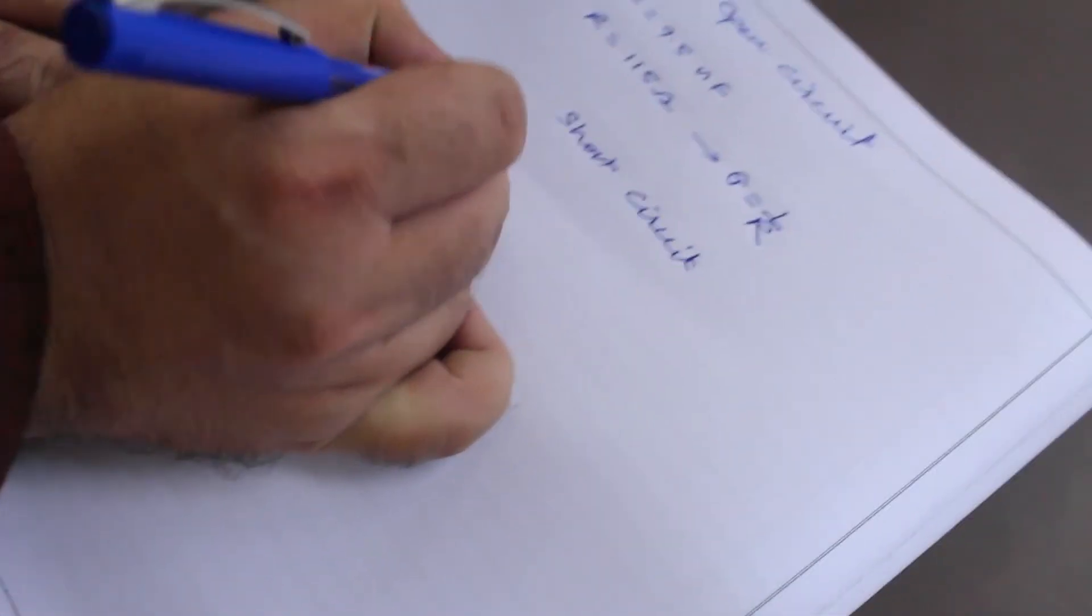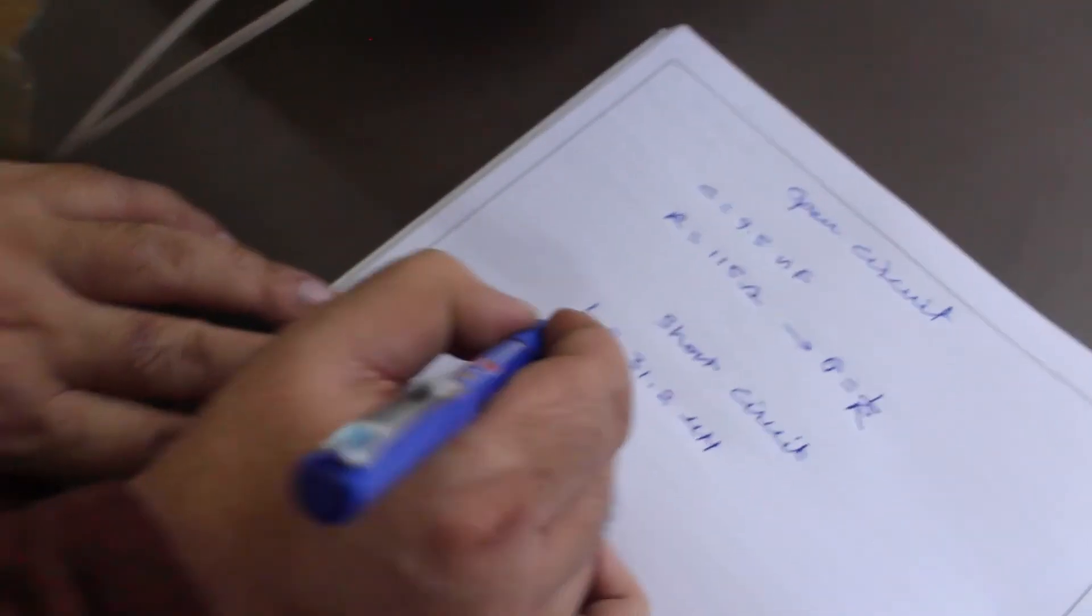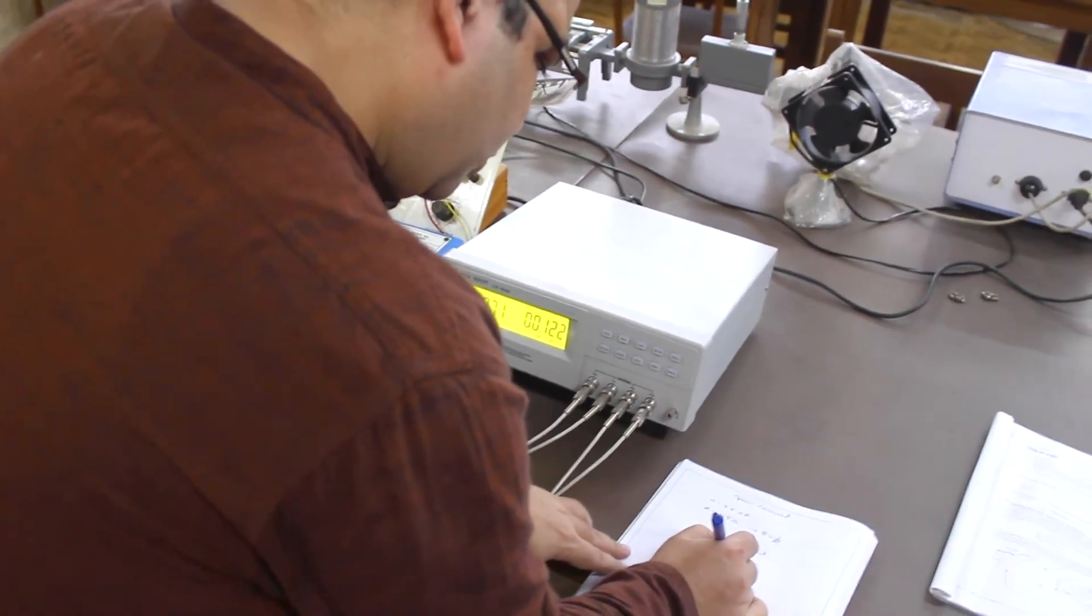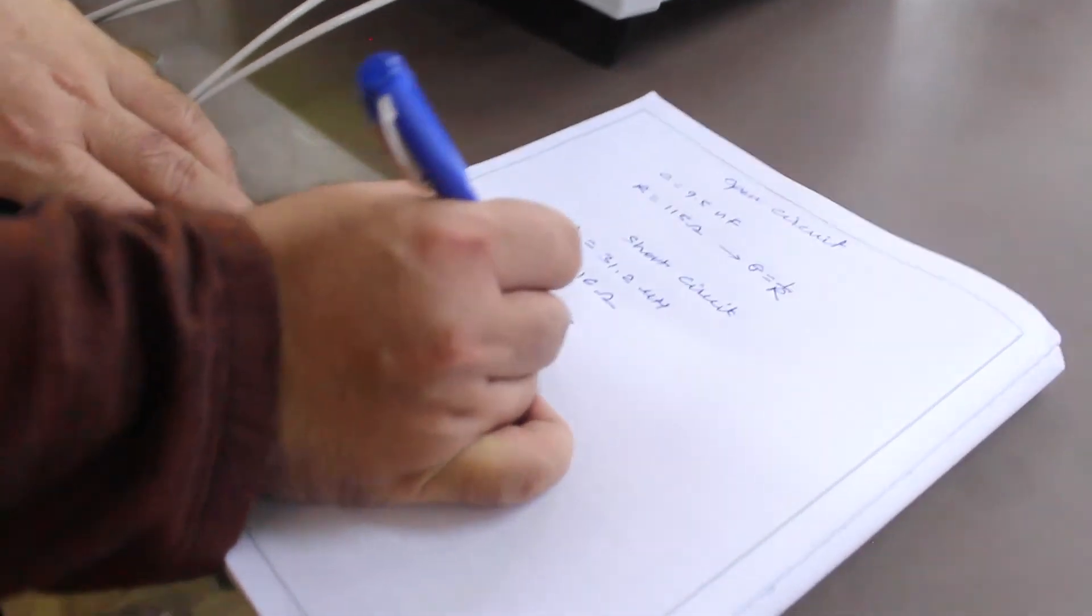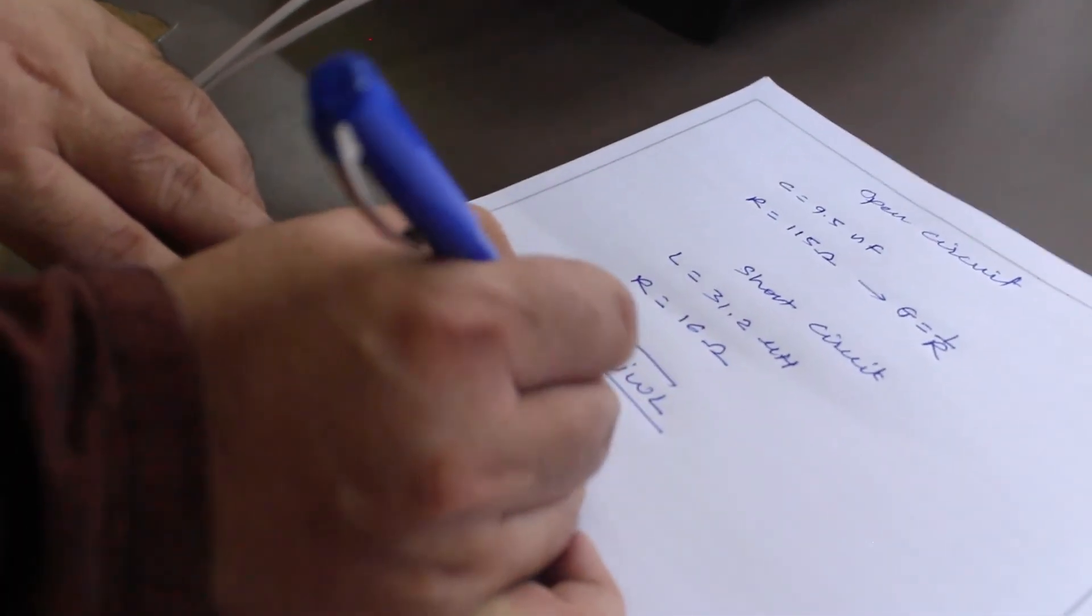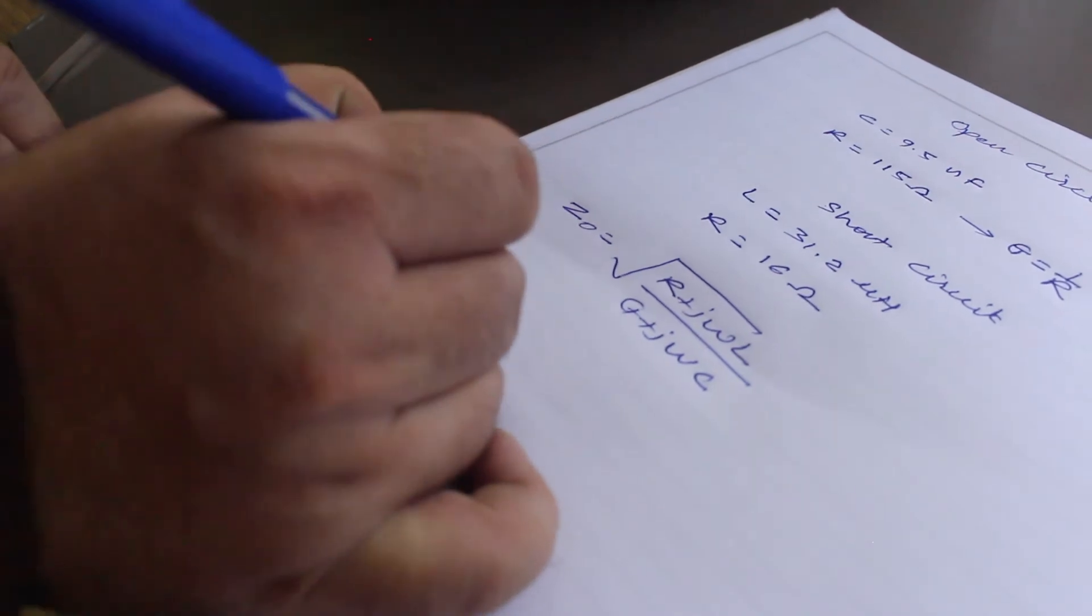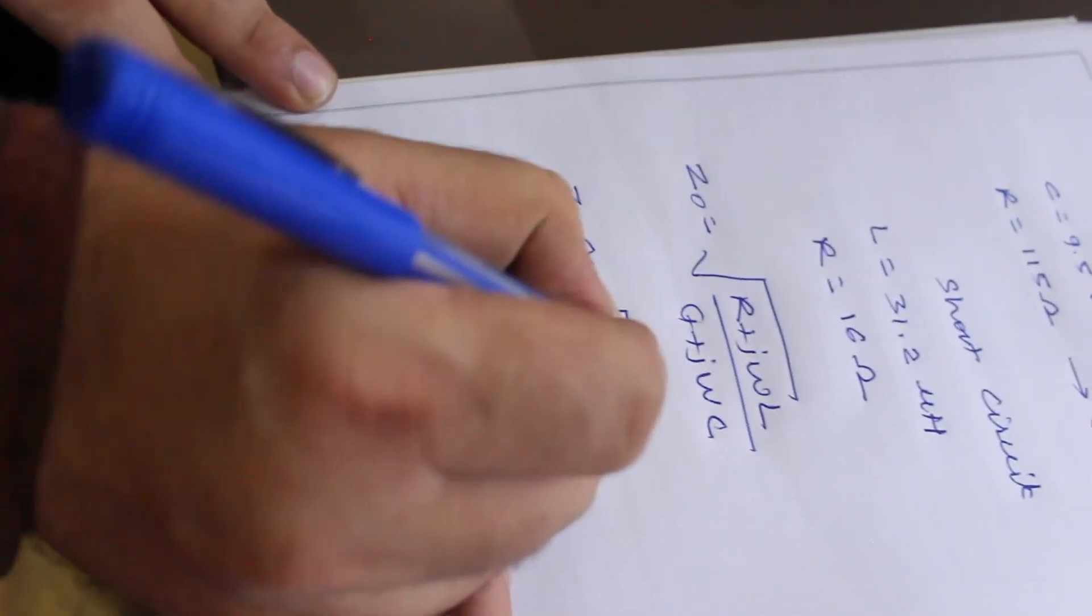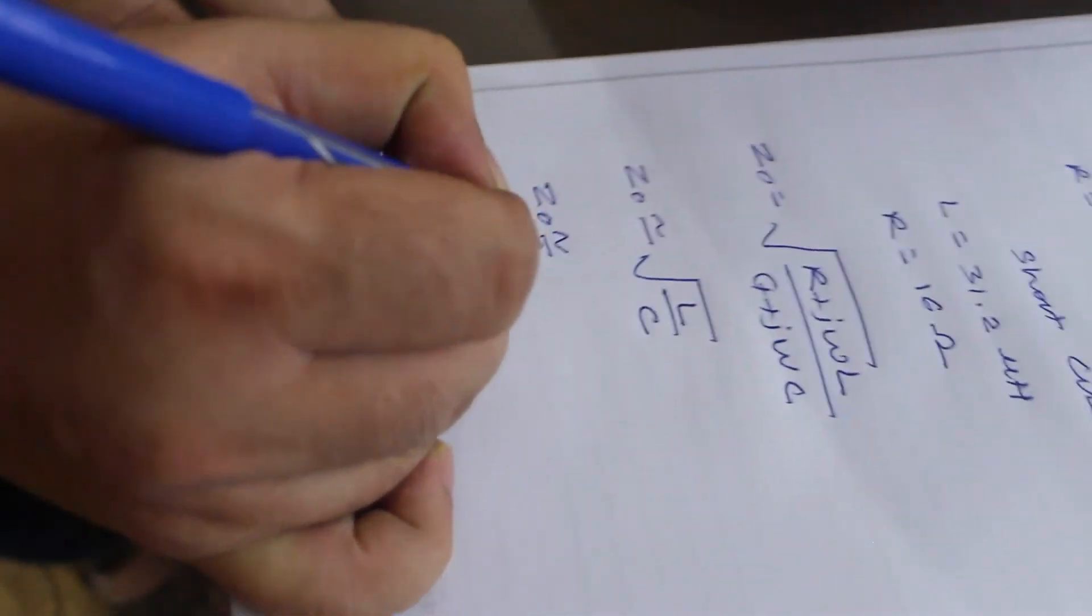L is 31.2 microhenry and R is 16 ohm. To calculate the characteristic impedance we can use the exact formula: Z0 is equal to square root of (R + jωL) / (G + jωC), which will give us the characteristic impedance value. Or as we are using 1 kilohertz, we can use approximate formula: Z0 is equal to square root of L upon C.